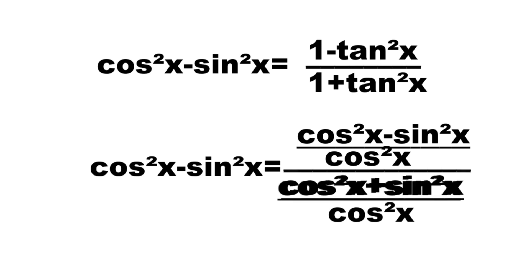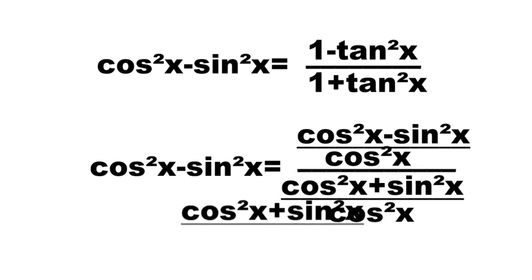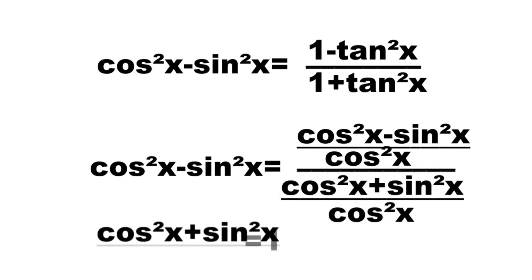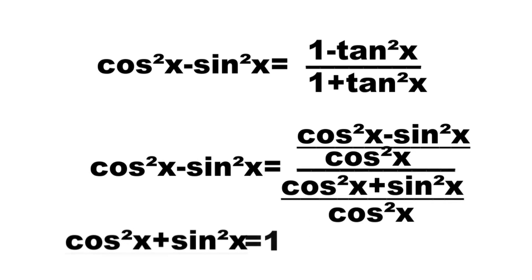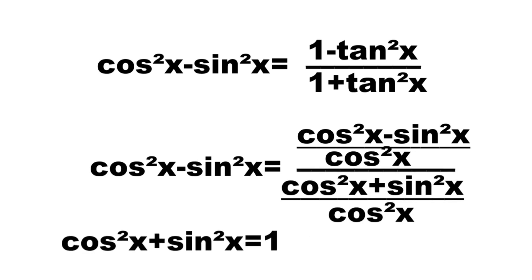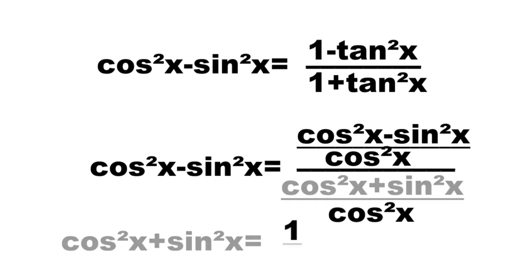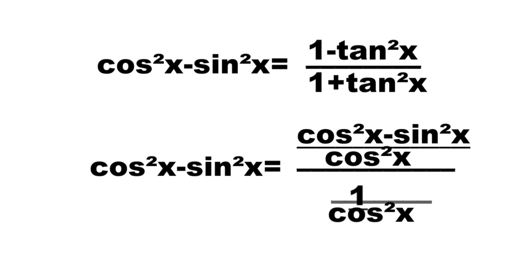By Pythagorean identities, we have cosine squared x plus sine squared x is equal to 1. By substituting, we have cosine squared x minus sine squared x over cosine squared x, all over 1 over cosine squared x.